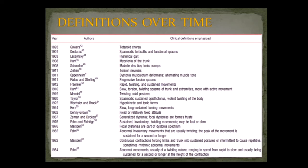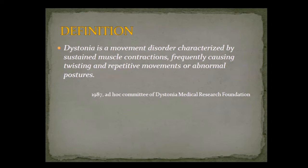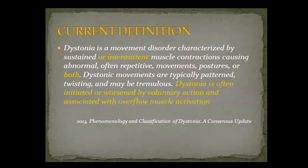The definition used up till recently defined dystonia as a movement disorder characterized by sustained muscle contractions, frequently causing twisting and repetitive movements or abnormal postures. However, this definition has drawbacks — they are not always sustained. Blepharospasm is intermittent. Does it always cause twisting? Not necessarily always. Take laryngeal dystonia: there is no twisting, but there is still abnormal muscle spasm. It does not describe everything you see in dystonia, but it was the best practical definition for a long time.